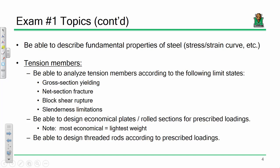Be able to describe the fundamental properties of steel. So the stress strain curve, I don't want you to memorize it, but just make sure that you understand what's going on there. Yielding, fracture, all that jazz. Tension members. Be able to analyze tension members according to the following limit states. Gross section yielding, net section fracture, block shear rupture, and slenderness limits. Also, I want you to be able to design economical shapes for those loadings. Remember, the most economical to us is the lightest weight. And also be able to design threaded rods.